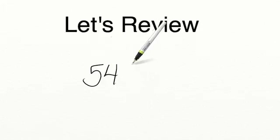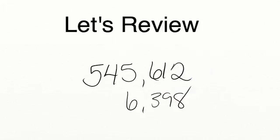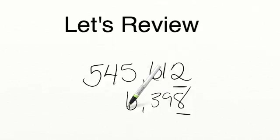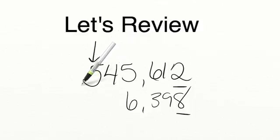Let's take a moment to review what you've learned in today's lesson. When you're comparing numbers, you need to make sure that you're lining up the place values. So if I wanted to compare 545,612 to 6,398, I would first start by lining up each of the place values — starting with the ones place, then the tens, hundreds, and thousands. Since our bottom number doesn't have any place value for the ten thousands or hundred thousands, we leave it blank. And lastly, we're going to start in the largest place value represented. Since our top number has a value in the hundred thousands place and our bottom number does not, that means that our top number is the larger number.